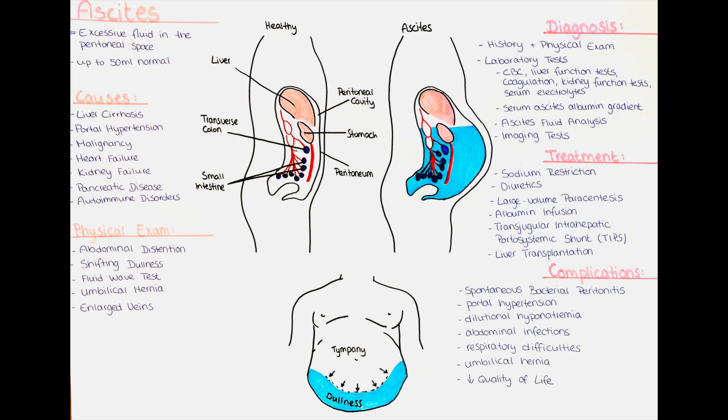The diagnostic algorithm for ascites involves a step-by-step approach to determine the underlying cause. As just mentioned, we typically start with a history and physical exam, where we obtain a detailed medical history, including any known liver disease, heart disease, or other relevant conditions. We want to perform a thorough physical examination, including abdominal examination, to assess the size, tenderness, and presence of any masses or organ enlargement.